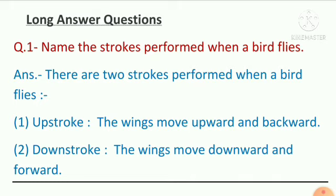Then write Question 1: Name the strokes performed when a bird flies. Jab ek bird fly karta hai, toh kon konsi strokes perform karta hai? Answer: There are 2 strokes performed when a bird flies. Number 1: Upstroke — the wings move upward and backward. Number 2: Downstroke — the wings move downward and forward. I hope you know what is upstroke and what is downstroke.